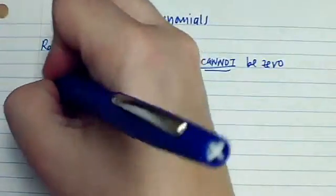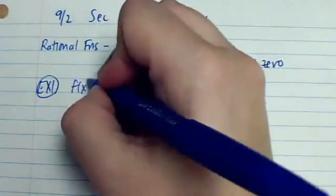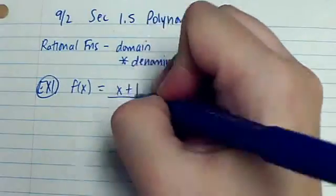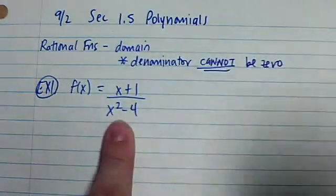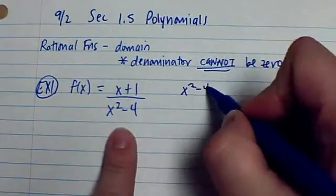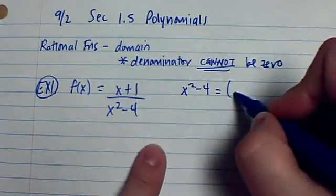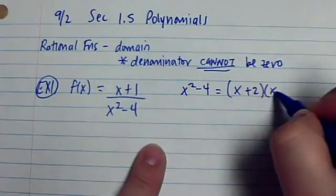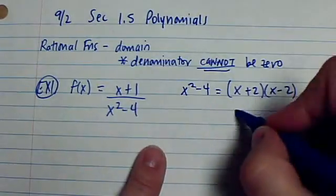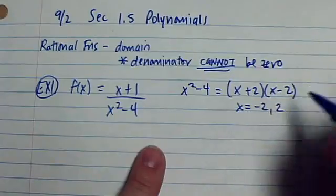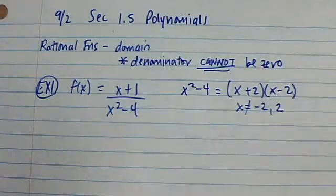So let's look at example one. So I have f(x) equal to (x+1) divided by (x²-4). So I'm only looking at the denominator. So I'm going to take x²-4. And this can be factored. This is factored as (x+2) and (x-2). The things that make this zero are negative 2 and positive 2. That is what x cannot equal.